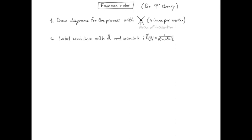The second rule is that each line should be labeled by its associated four momentum k. And for the calculation of the amplitude we associate a propagator in momentum space for each of these lines.